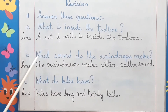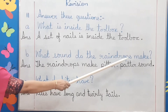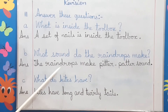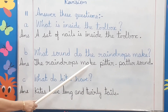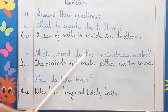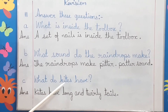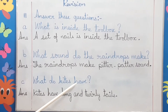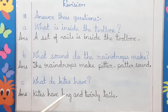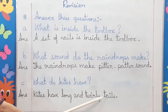B. What sound do the raindrops make? Answer: The raindrops make a pitter-patter sound. C. What do kites have? Answer: Kites have long and twirly tails.